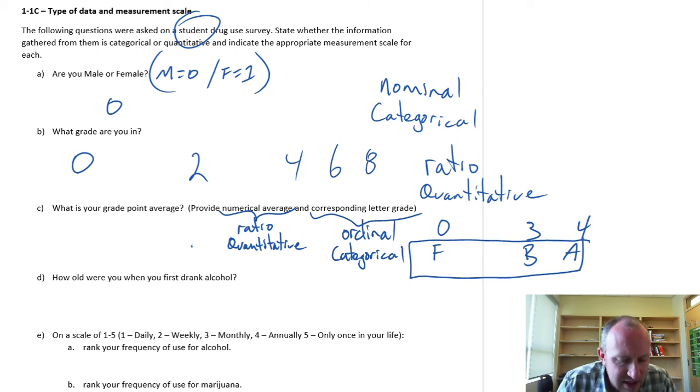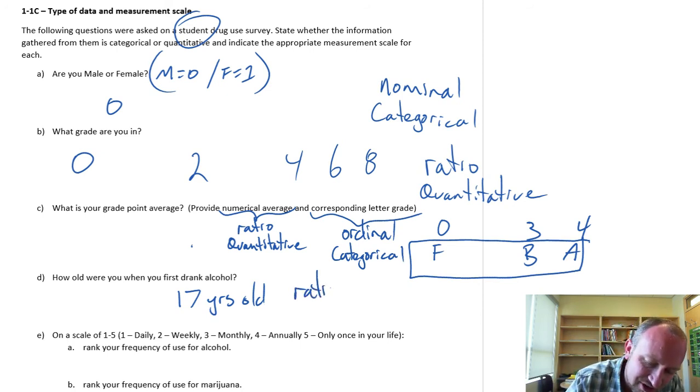Okay, moving on. Part D. How old were you when you first drank alcohol? So this is going to be giving us age. Let's say I was 17 years old. Fabricated data. I wasn't actually 17 years old, but we don't need to get into that. 17 years old was the first time this particular survey respondent drank alcohol. What type of data is this? This is going to be ratio data again. So here we have ratio. Why?